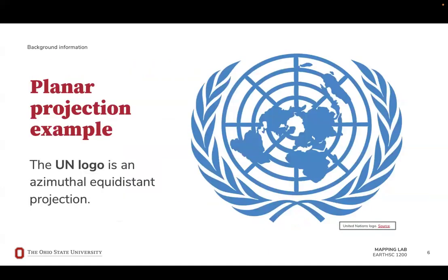Beyond just an orthographic projection, a planar projection can also represent areas of Earth's surface which are not readily visible when observed as a globe. An example of an azimuthal projection, which is not stereoscopic but instead equidistant, is the UN logo, which depicts Earth as seen from the North Pole.